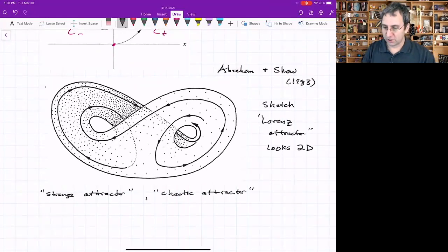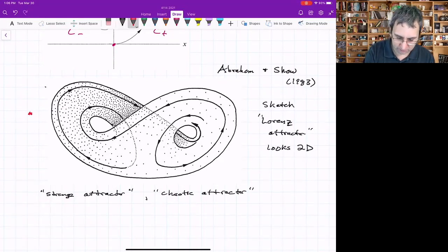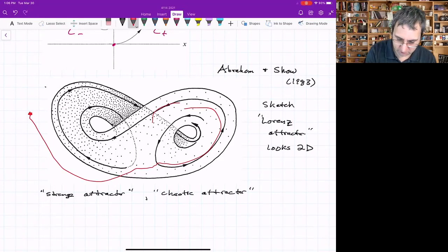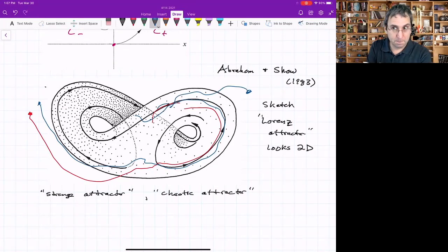So the motion on the attractor, you start with initial conditions basically anywhere and they will settle down to this thing and then be moving around on it no matter where they start. They'll settle down to this but even on this thing there's sensitive dependence on initial conditions.